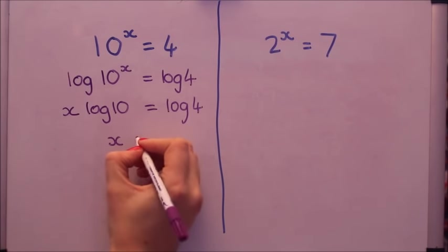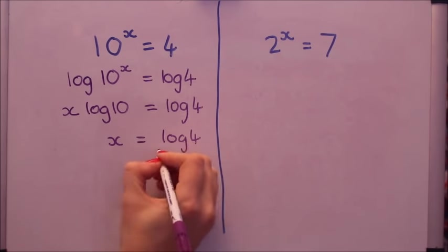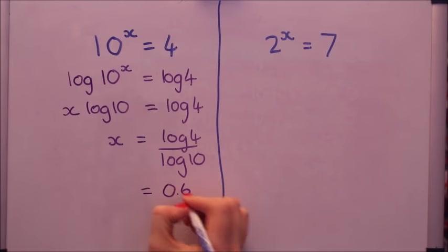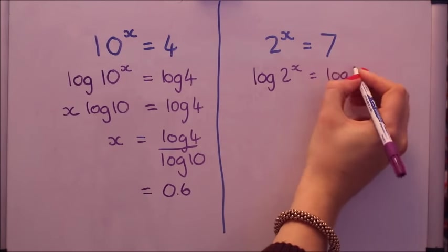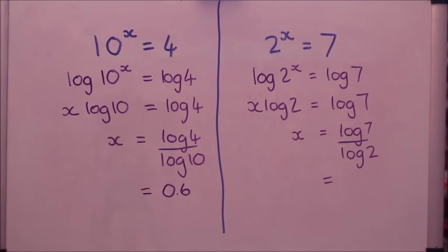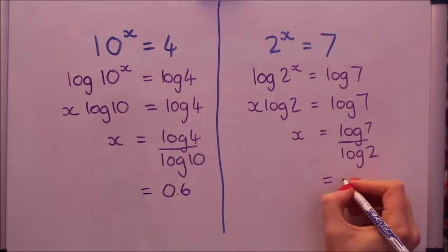And just a simple rearranging. You can then type that into your calculator and get a proper answer. Round it to however many decimal places they say in the question. Let's just do the second one quickly. Brilliant!